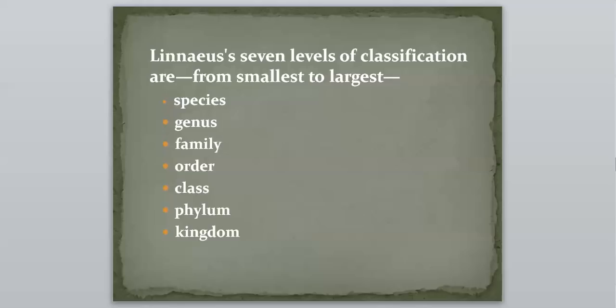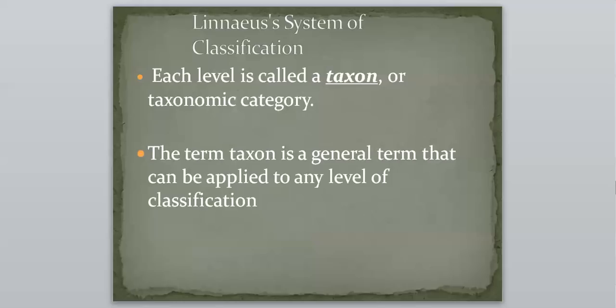So each level is called a taxon or taxonomic category, and the term taxon is just a general term that can be applied to any level of classification. So, for example, if we're talking about the kingdom animalia, we can call that level a taxon. If we're talking about a certain order, we can just call that a taxon. So a taxon is a general term that can apply to any level that we're talking about in terms of classification.